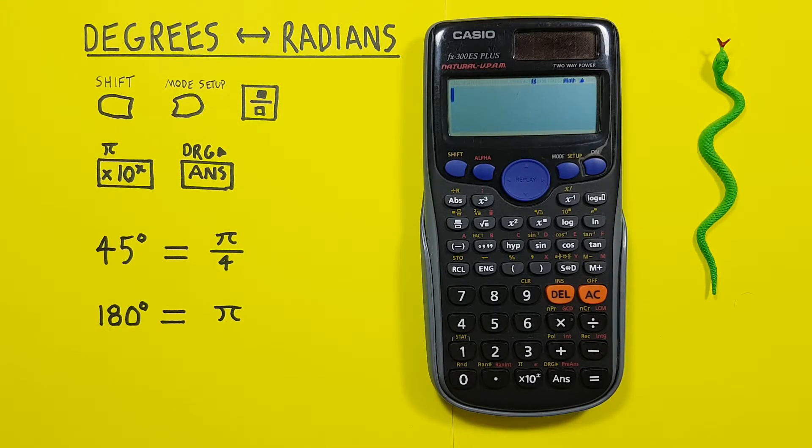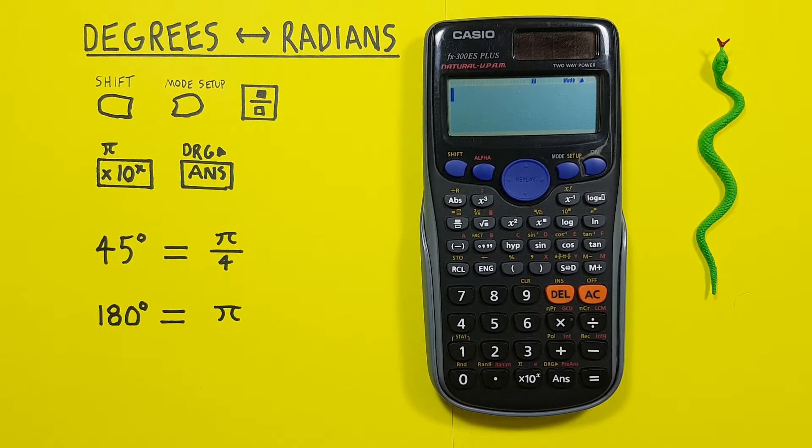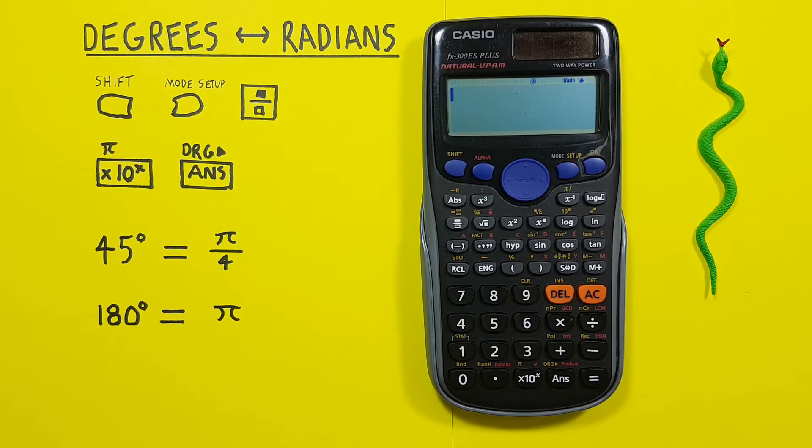Hello and welcome to HD Calcs. I'm Rick, and in this video we're going to have a look at how we can convert between degrees and radians on the Casio FX 300 ES Plus calculator.